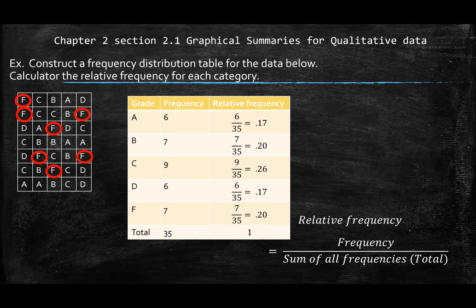Looking at this, if you add all your relative frequencies — 17 plus 20 plus 26 plus 17 plus 20 — it has to equal 100, or in decimal form, equal to one. Relative frequency and percentage are interchangeable: 0.17 means 17% of students have an A, 20% have a B, 26% have a C, 17% have a D, and 20% have an F.